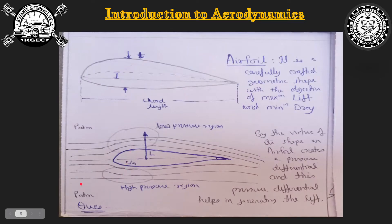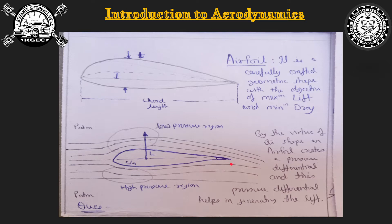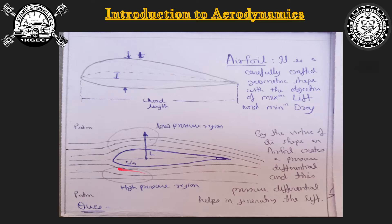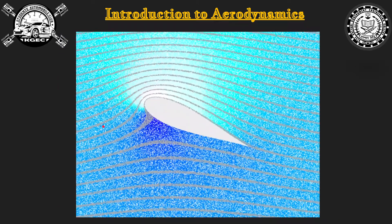If an air particle moves around the top surface of the airfoil and another moves along the bottom surface, Bernoulli's equation makes the assumption that these two air particles reach the end of the airfoil at the same time. Because the air particle at the top surface has to cover a larger distance in the same time, it speeds up. The bottom particle does not speed up — it actually decelerates. When the top particle speeds up, velocity increases and pressure decreases, creating a low pressure region on top.